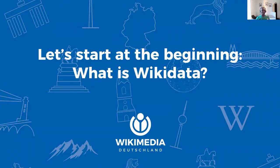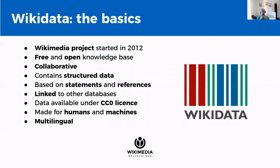We basically cannot talk about Wikibase without giving an overview of Wikidata first — that is how connected these two products are. So how did it all start? What is Wikidata? Wikidata is a sister project of Wikipedia. It was launched in 2012 and it's actually one of the youngest of the Wikimedia projects, although one of the largest. Wikidata is a free knowledge base that contains structured data based on facts and references that anyone can edit and reuse.